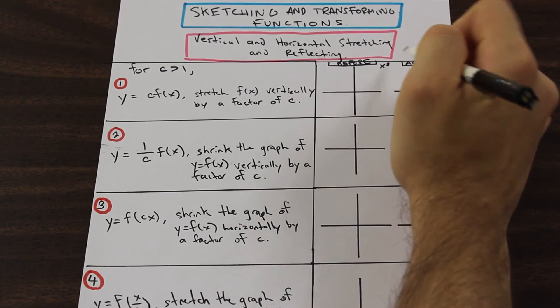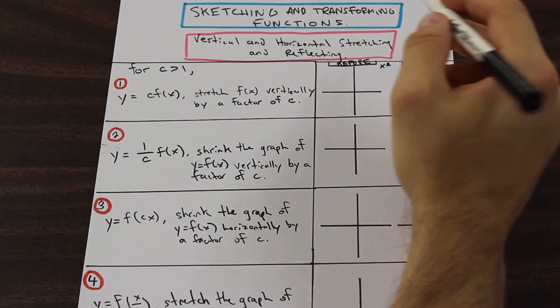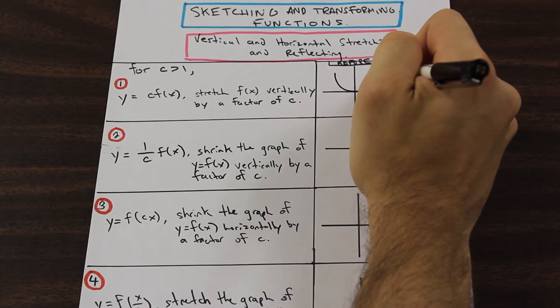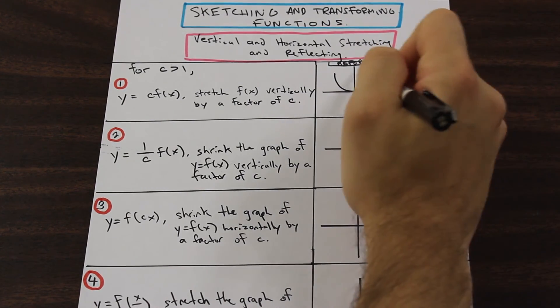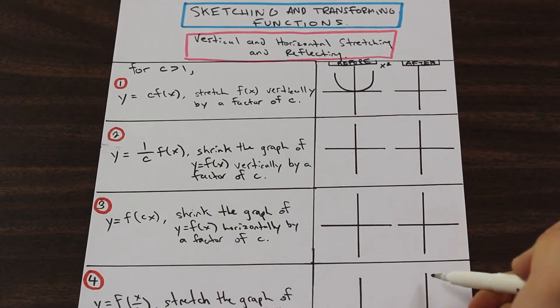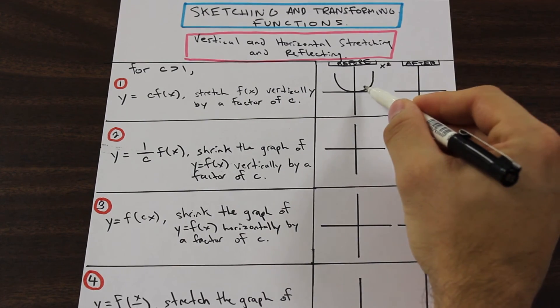Say we have y equals x squared. If we have y equals x squared, which is going to look like this. So on the left here, I have just what the function looks like, and then on the right, I have what it would look like after we apply this transformation.